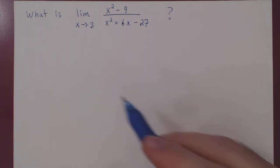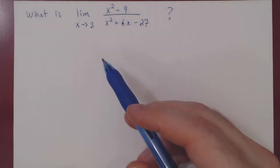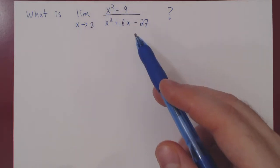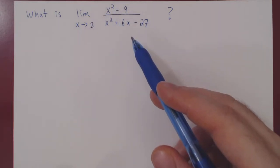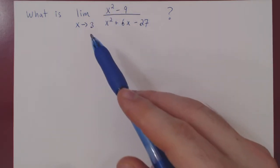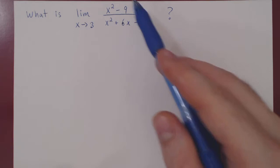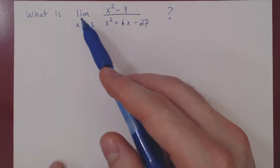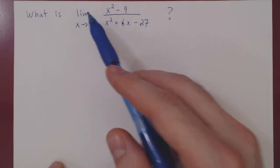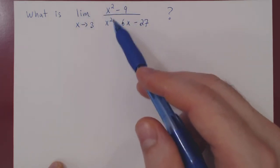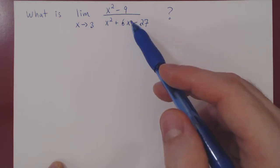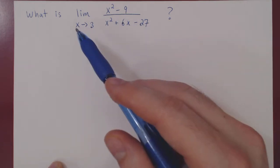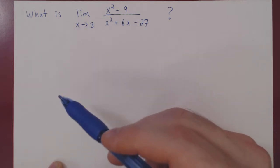In this video, we will consider an example of a non-trivial limit. We are asking what is the limit of x squared minus 9 over x squared plus 6x minus 27, as x approaches 3.